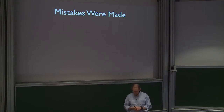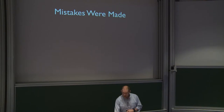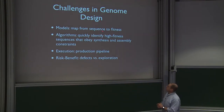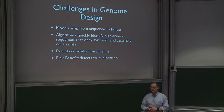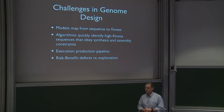But we made some mistakes. It is a challenge to do all of this design. So mistakes were made — and really they'd be my fault, because my group did the computational design. There are a lot of problems. We don't really have any good models that map from sequence to fitness. We just heard a talk trying to build regression models mapping variants to fitness, but those are still limited. Also trying to identify high-fitness sequences that obey synthesis and assembly constraints — those algorithms didn't really exist. We weren't sure exactly whether what we implemented was going to work well.